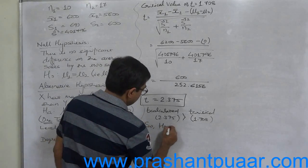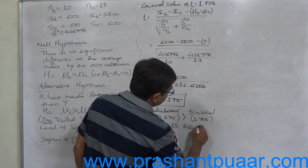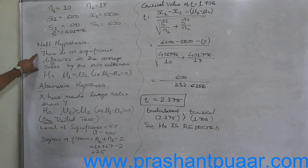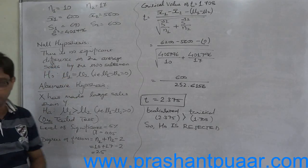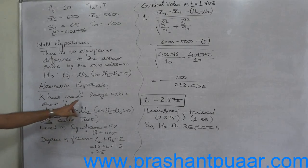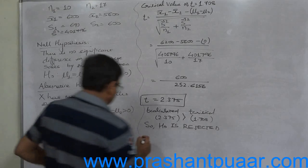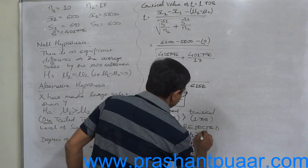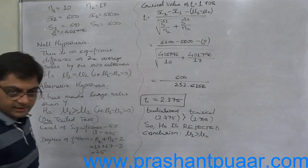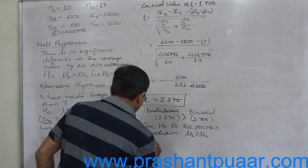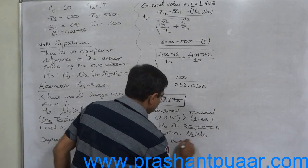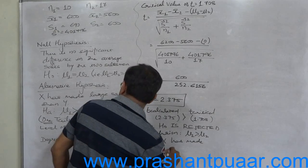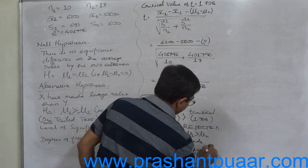That means the null hypothesis is rejected. Now we cannot believe that there is no significant difference in the average sales by the two salesmen. And that means argument of X is correct. Mu1 is greater than mu2, or average sales by X is greater than the average sales by Y. That means X has made larger sales than Y.